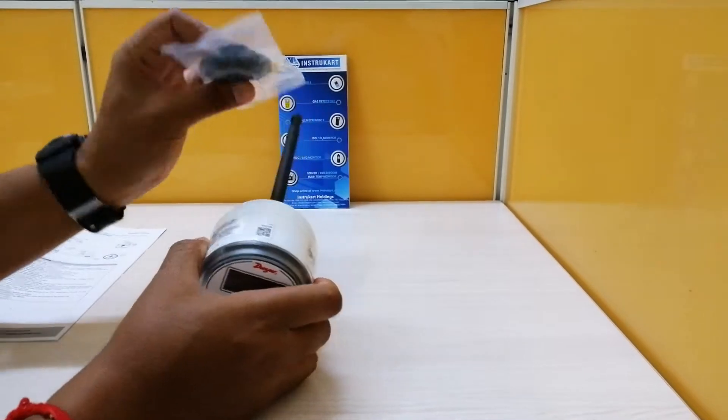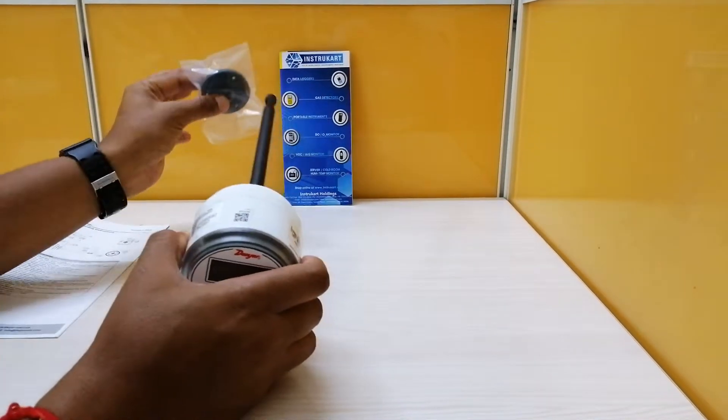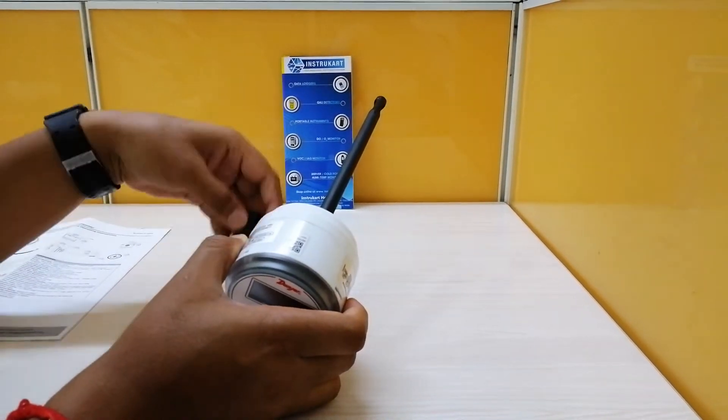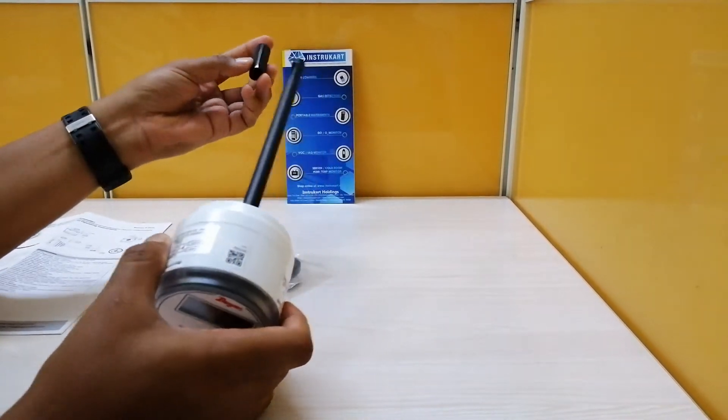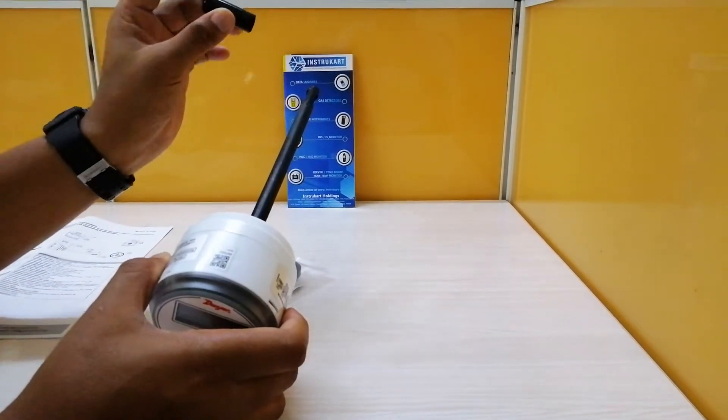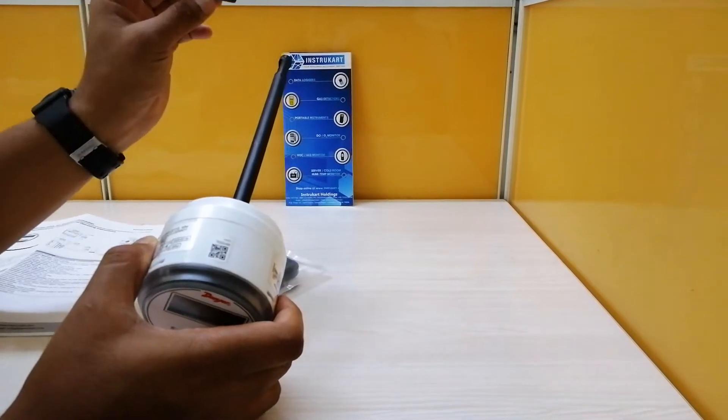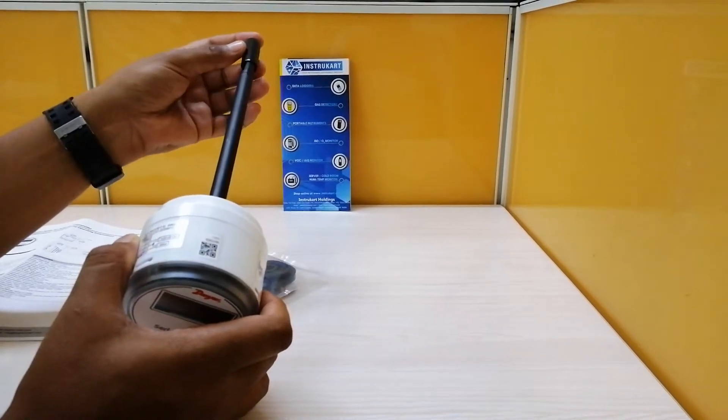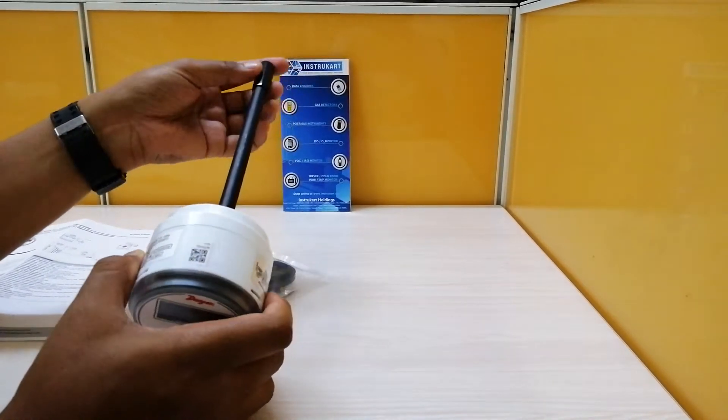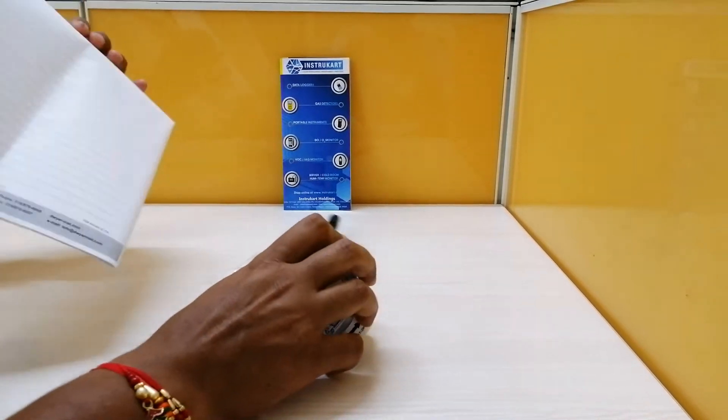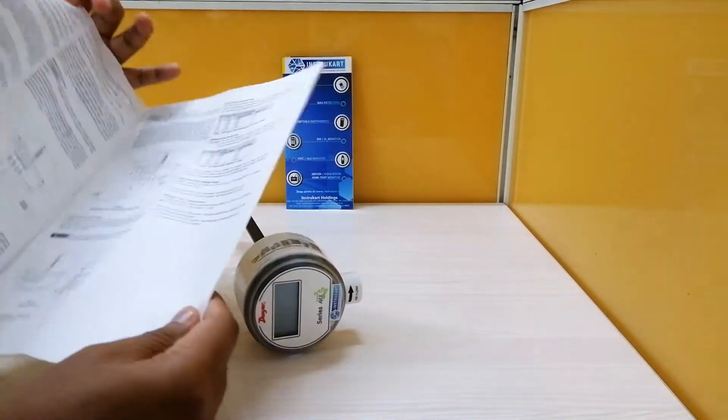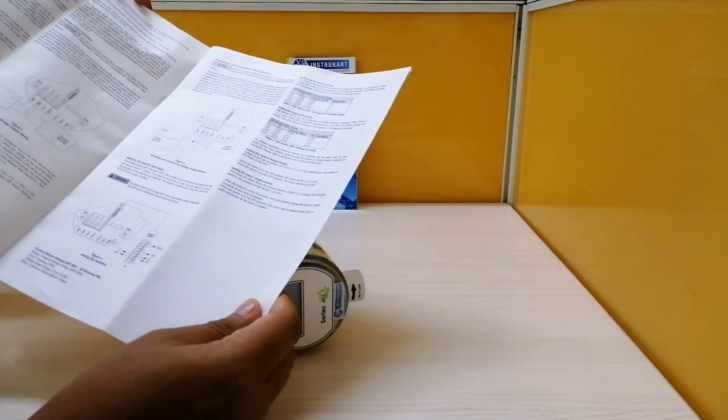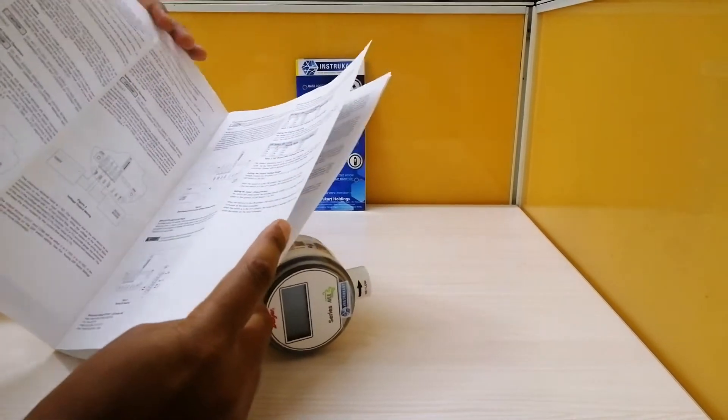You get the standard accessory as this clamp for fitting into the duct and a cap to protect the sensor. You also get an instruction manual on how to use the connections to connect to your monitoring system.